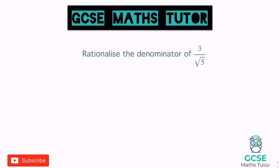In this video we're going to have a look at rationalising the denominator. Make sure you've got some paper and make some notes before you have a go. Rationalising the denominator just means that we want to make the denominator a whole number and not a surd anymore. We are going to create an equivalent fraction — the same fraction — but where there's not a surd on the bottom.